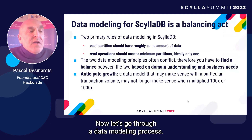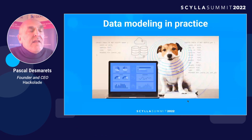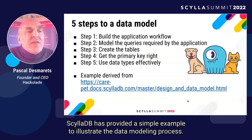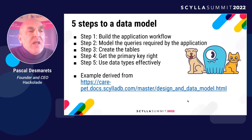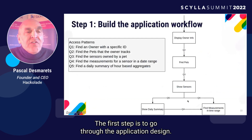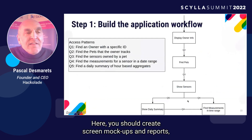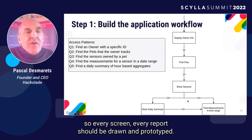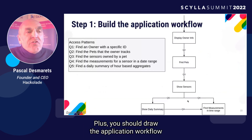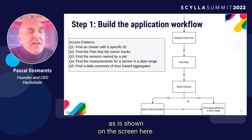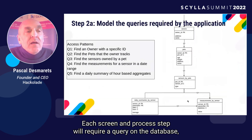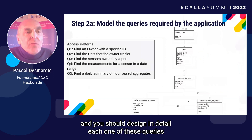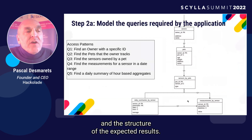Now, let's go through a data modeling process. ScyllaDB has provided a simple example to illustrate the data modeling process. The first step is to go through the application design. Here, you should create screen mockups and reports — so every screen and every report should be drawn and prototyped. Plus, you should draw the application workflow, as is shown on the screen here. Each screen and process step will require a query on the database, and you should design in detail each one of these queries and the structure of the expected results.